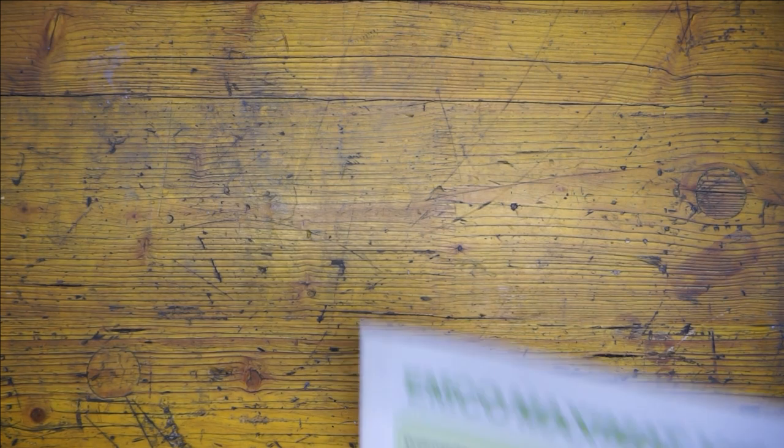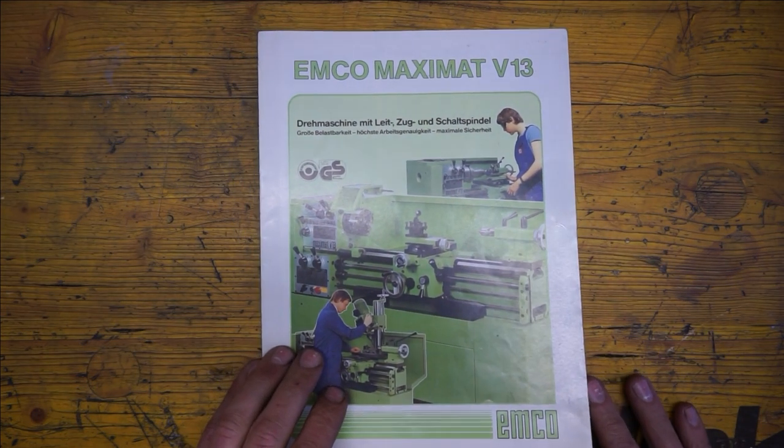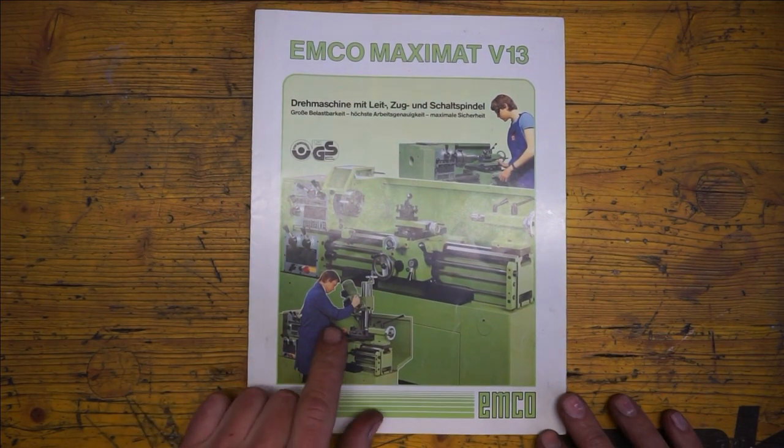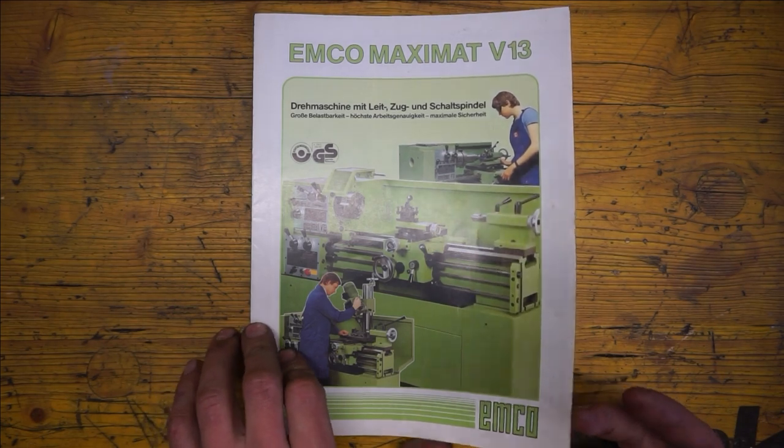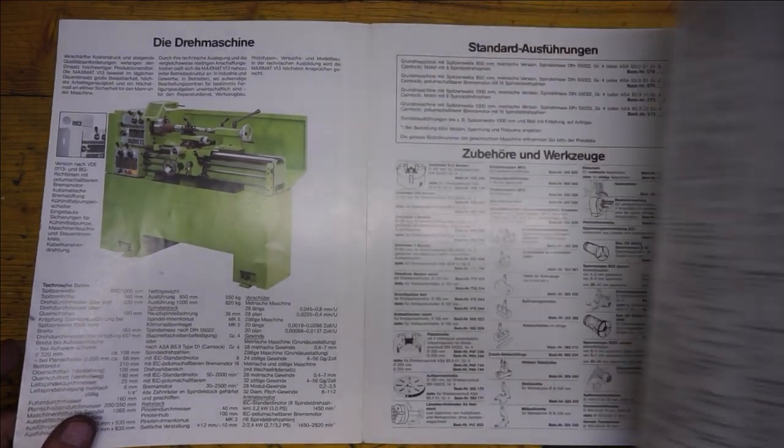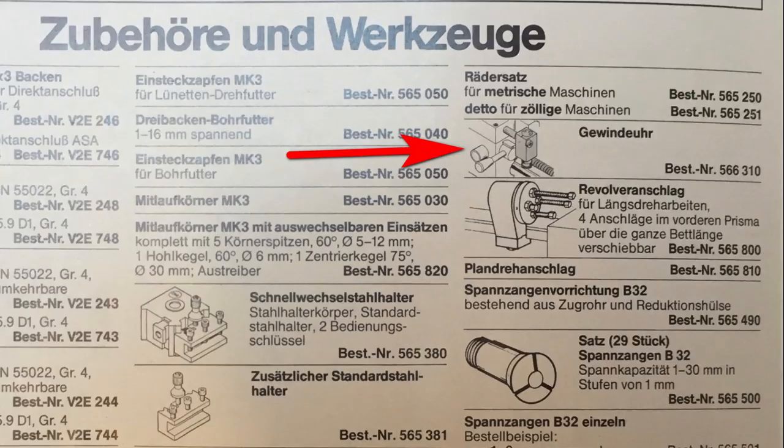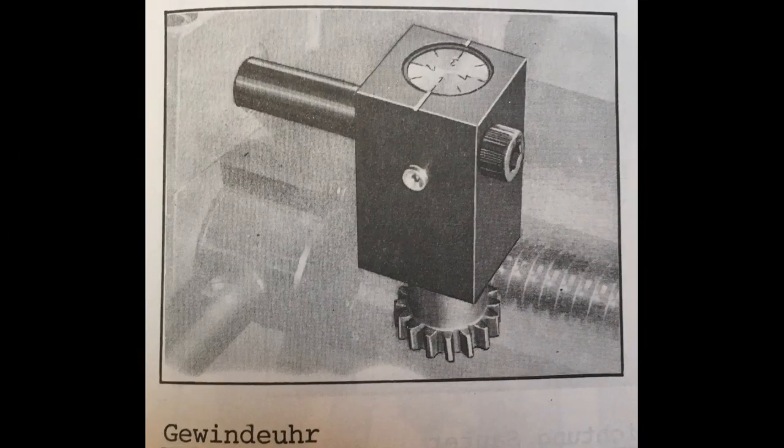For my Emco V13 lathe, this here 1989 accessory catalog lists a threading dial indicator. Look at how classy those guys were in the show workshops back in my childhood. And here it is. I assume this picture here shows the threading dial indicator for the imperial 4 TPI lead screw version of the lathe. We see a presumably 16 tooth gear and the 8 index dial, which we discussed before. I don't have a picture of this lathe's original metric threading dial, but my friend Rolf told me that he hated the V13's metric threading dial, because changing gears on this indicator was awkward and it was easy to mess something up.